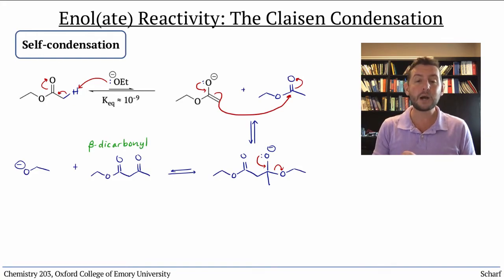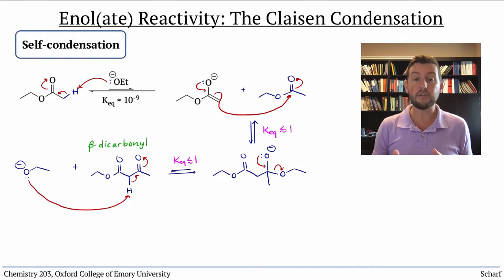The problem is, none of the steps up to this point is very favorable. All have Keq near or less than one. But the last step of the Claisen condensation does have a favorable Keq. The proton in between the two carbonyl groups is pretty acidic. It has a pKa of about 12 in this case.